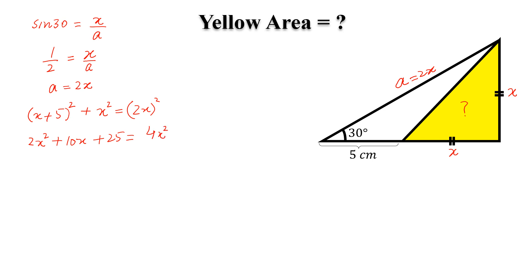Simplify more, and we will get 2x² - 10x - 25 = 0. Now, this is a quadratic equation, and we can solve this equation by quadratic formula.